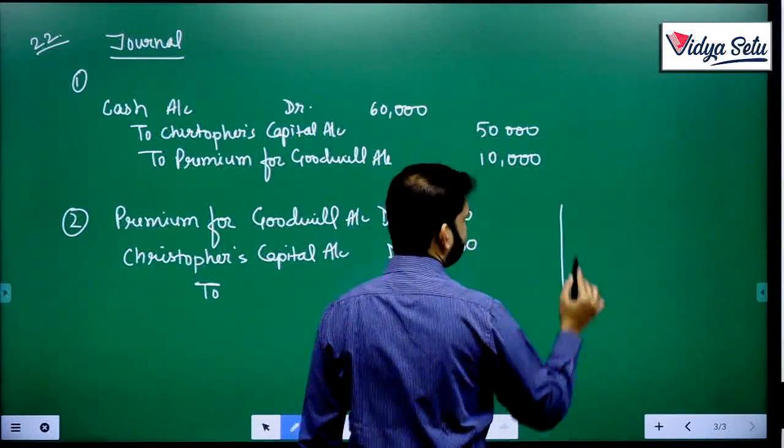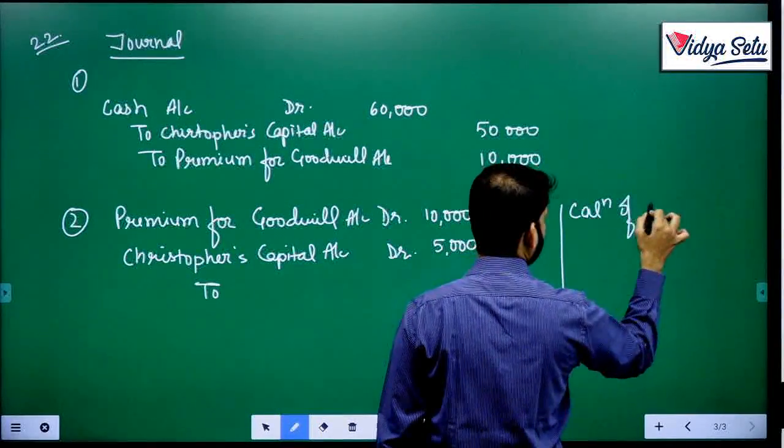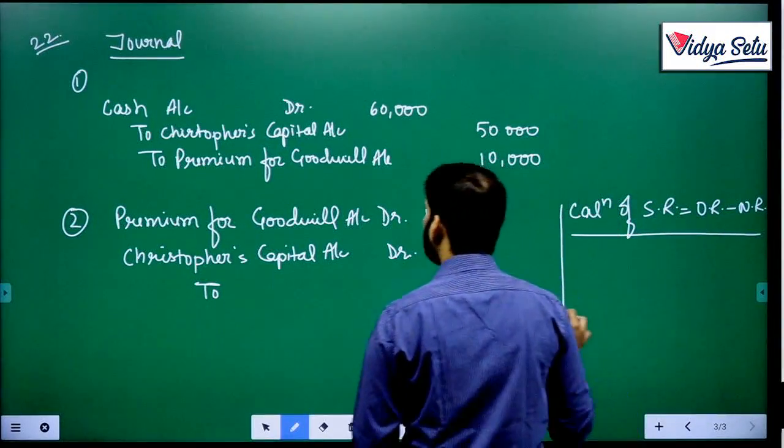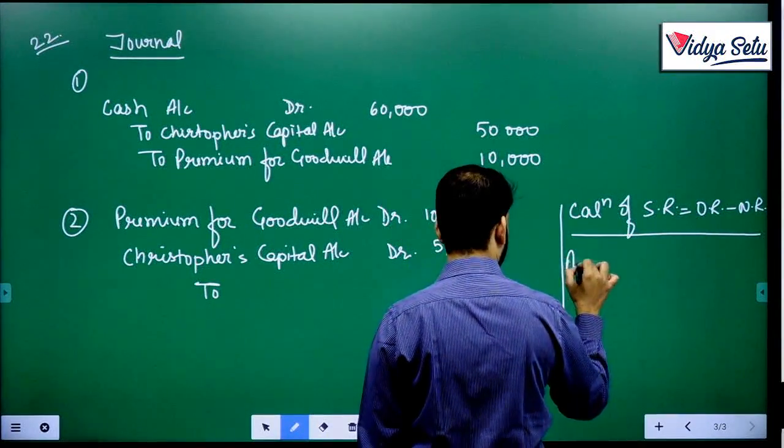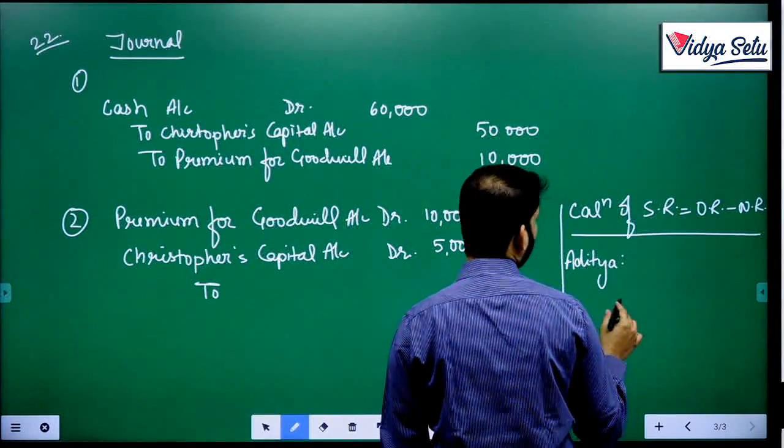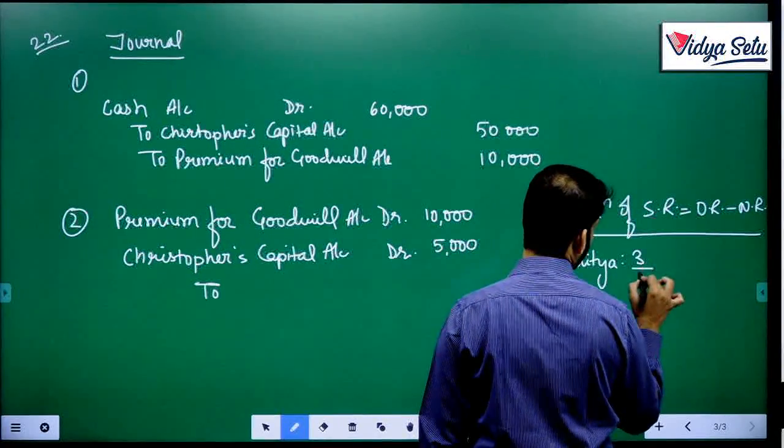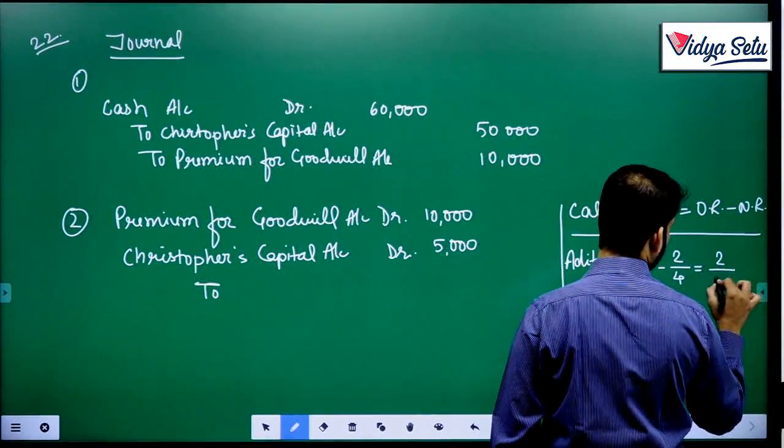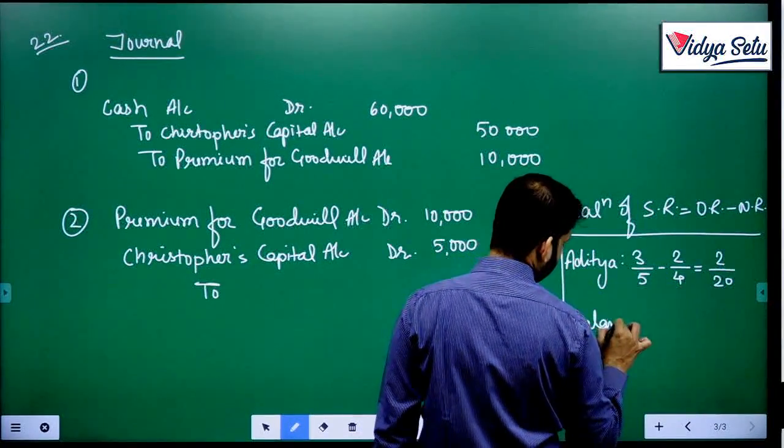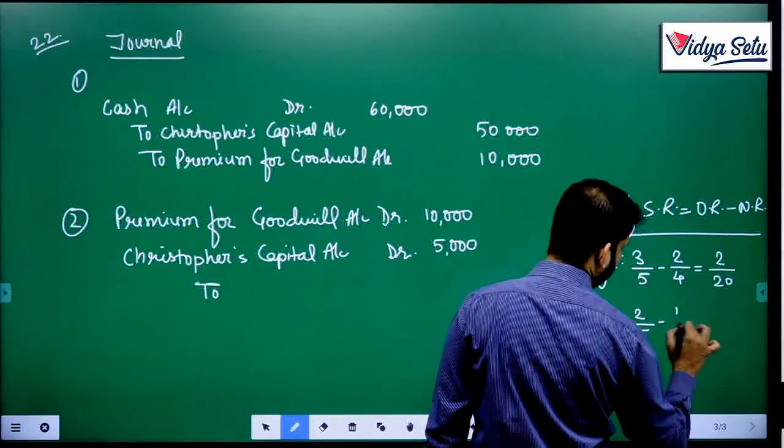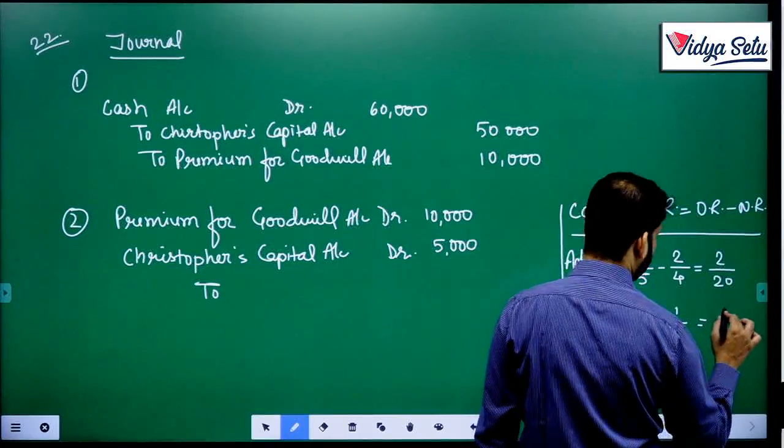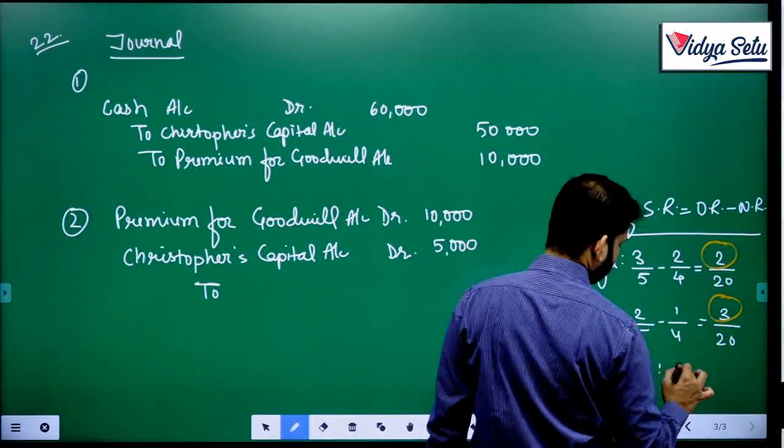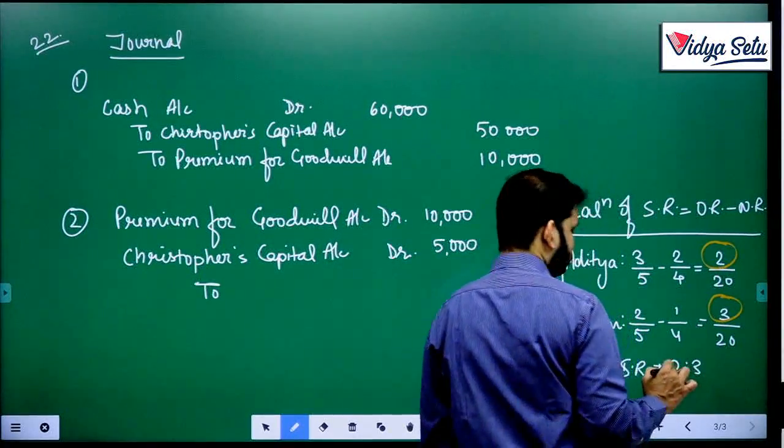Let us find out the sacrificing ratio. The first one is Aditya. Aditya's old share was 3 upon 5 and his new share is 2 upon 4, so 12 minus 10, 2 upon 20. Balan 2 upon 5 minus 1 upon 4, that gives me 8 minus 5, 3 upon 20. So 2 to 3, sacrificing ratio is 2 to 3.